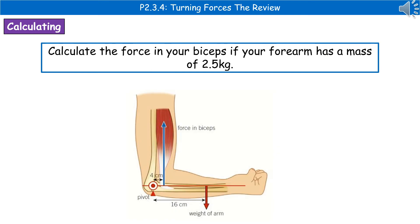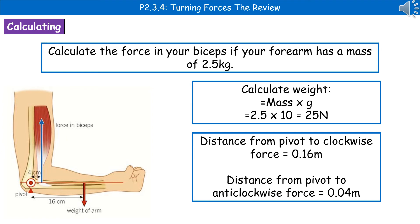We could be asked to carry out a calculation using these principles. The kind of question we could get is: calculate the force in your biceps if your forearm has a mass of 2.5 kilograms. Don't ignore diagrams, as they often contain additional useful information. First, we need to calculate the weight: weight equals mass times gravitational field strength. On Earth that's times 10, so 2.5 times 10 gives us 25 newtons.